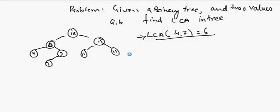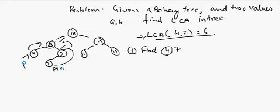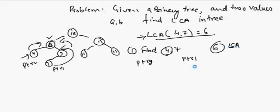Here, we can't rely on the property of a binary search tree. So what we'll do is find one of the nodes — 4 or 7 in this case — and just return that node. We'll figure out that 4 is this node, return it to its parent, and return 7 to its parent. This will return to 6. Let's say this is ptr1 and this is ptr2. So node 6 will see that one node is ptr2 and the other is ptr1, and both of them are on different sides of 6, so it is the LCA.